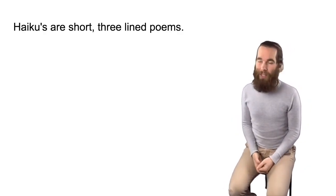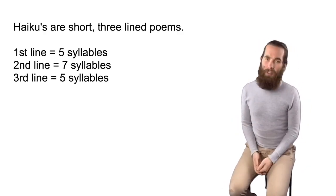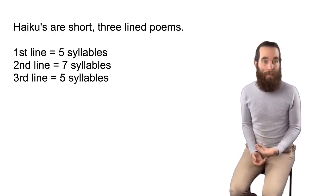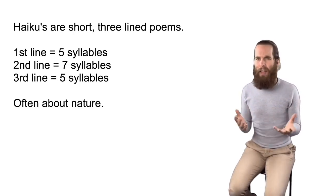Often haikus are written about nature, seasons, and natural things — not all the time, and we can change that up. But in order to get some seeds for writing poetry, you may want to go for a walk, sit in your backyard, look out a window, or look at your writer's notebook for other seeds for your haikus. To summarise: haikus are short, three-lined poems. The first line has five syllables, the second line has seven syllables, and the third line has five syllables again. And they're often about nature.